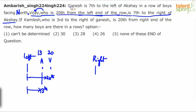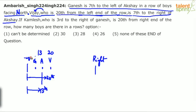Now go back to the previous statement. Ganesh is 7th to the left of Akshay. Akshay is only in the 13th position from the left. So Ganesh will come on the left side. Ganesh's position will be 13th minus 7th — so Ganesh is 6th from the left. Akshay is 13th and Vijay is 20th. 6 plus 7 is 13, 13 plus 7 is 20. The first two points have been clearly marked.